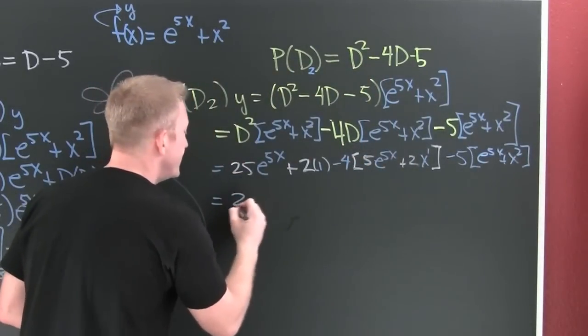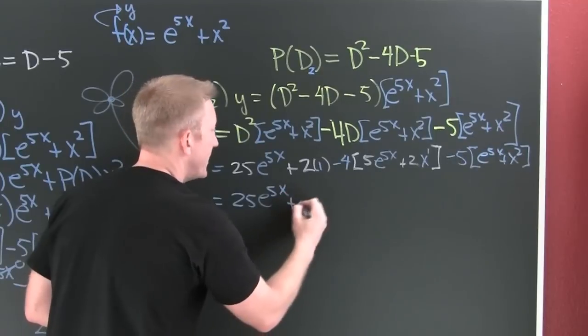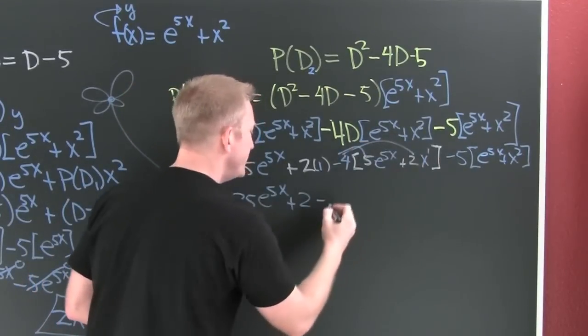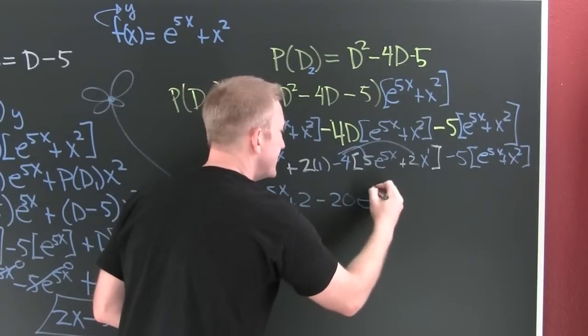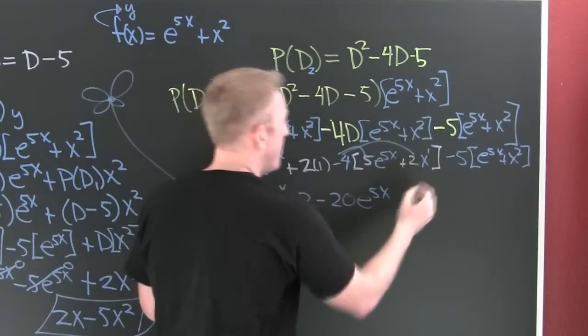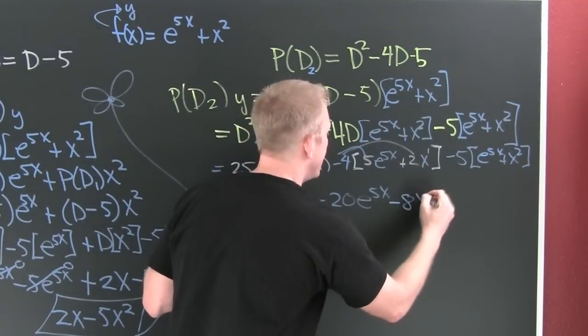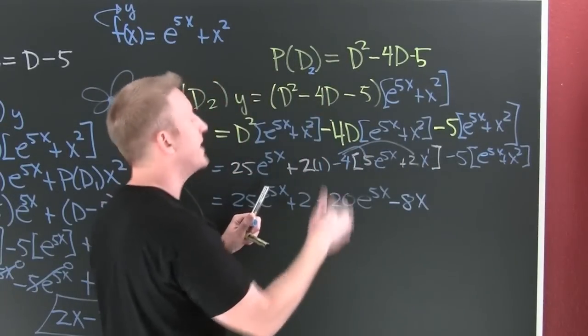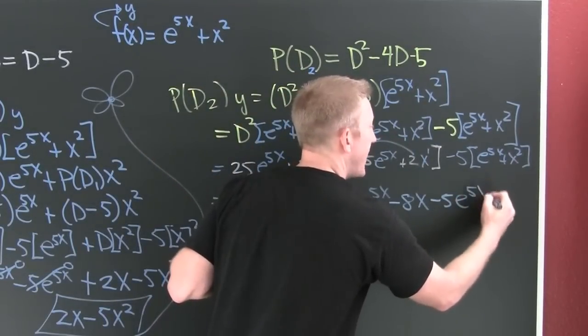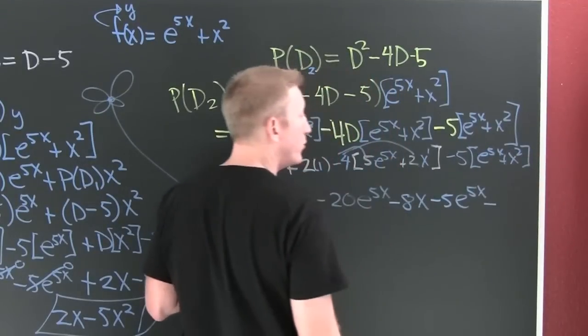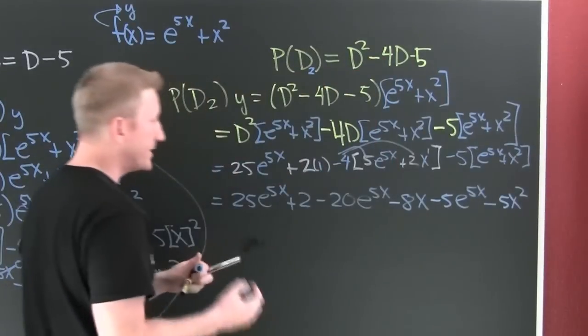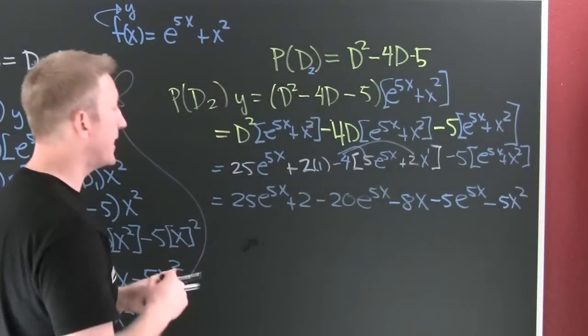Finish him. This is 25e to the 5x plus 2 minus 20e to the 5x minus 8x minus 5e to the 5x minus 5x squared. Gather, collect, and combine. And here we find you get what you need.